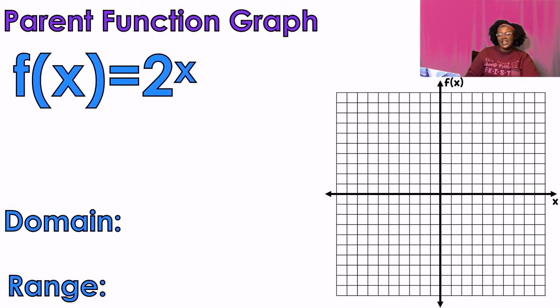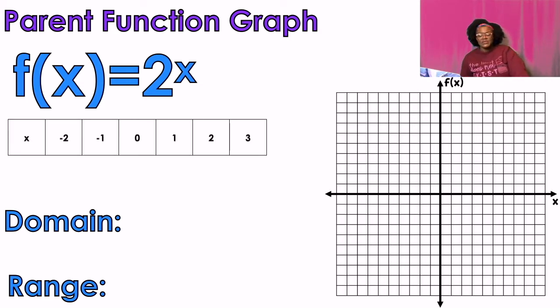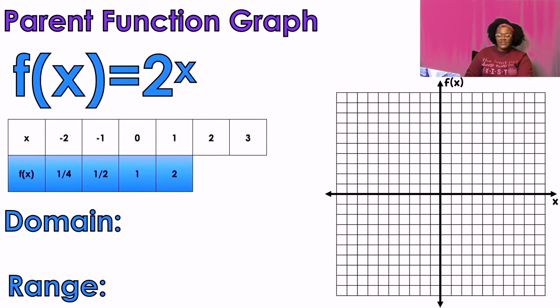So this is the parent function. Let's talk about what the general graph looks like. So usually we use two to the power of x to demonstrate that. So we're going to plug in some table values. If I plug in negative two, I'm going to get one fourth. If I plug in negative one, I get one half, zero one, one two, two four, three eight. So what that looks like on a graph, I'm going to go ahead and plot those points so that we can see. And we see that it's steadily rising. And it goes up pretty quickly, actually.